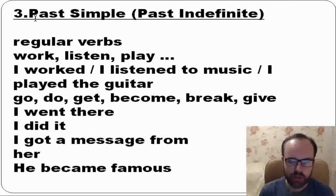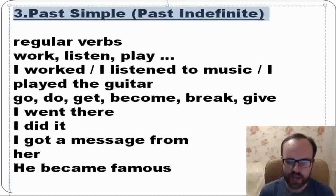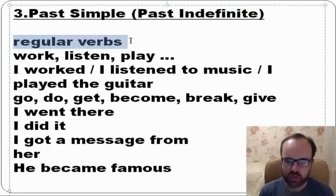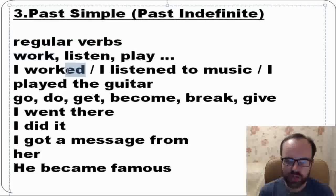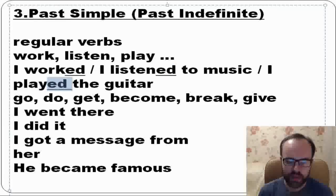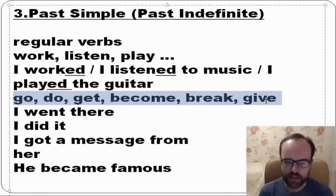If you want to say something in past simple, you add ED. For example: I worked, I listened to music, I played the guitar. There are also irregular verbs such as go, do, get, become, break, give.